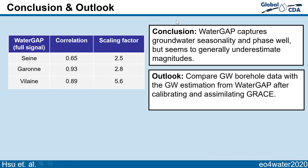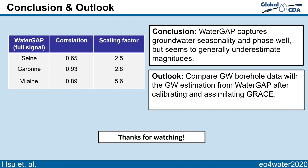In conclusion, WaterGAP generally performs very well and captures the seasonality and phase very well, but generally underestimates the magnitudes. The outlook is that we are hoping to assimilate GRACE data into WaterGAP and then use the same dataset to validate, hoping that calibrating and assimilating would improve the performance. Thank you for watching.